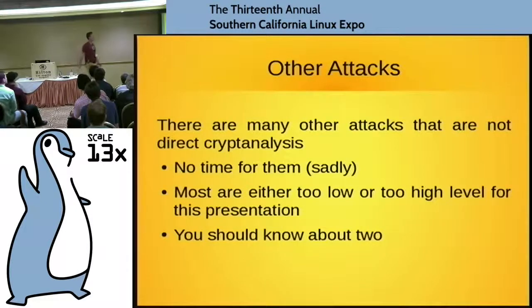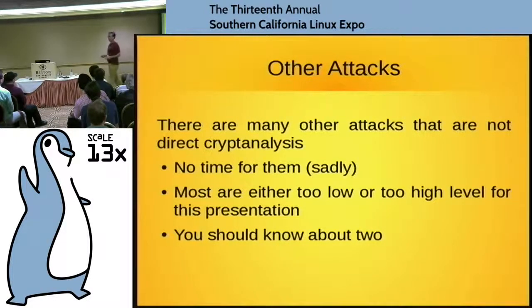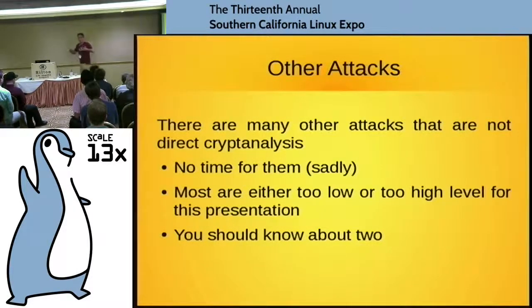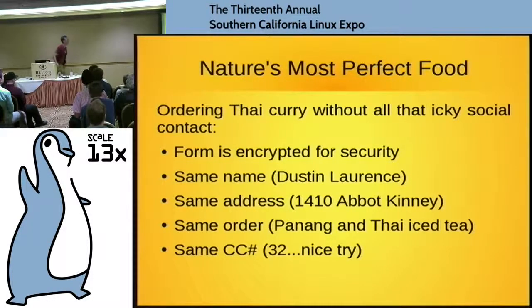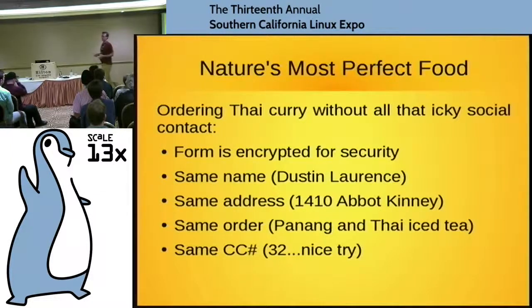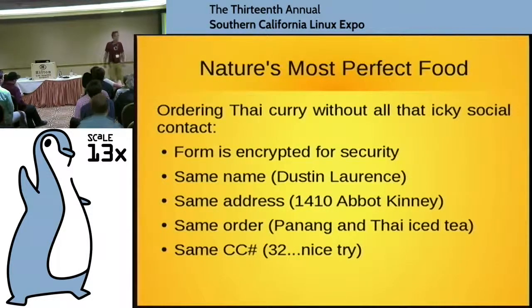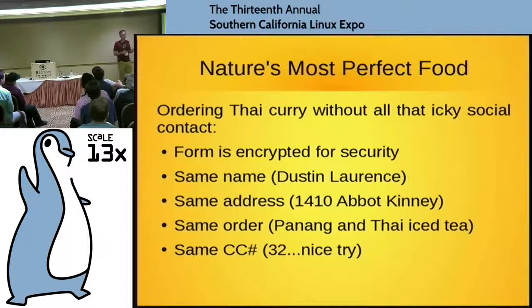Now there are actually a whole bunch of other attacks that are not direct cryptanalysis. Most of them don't fit in this talk because they're really low-level — you fix them in the implementation — or they're really high-level — you fix them with the rest of your security posture. But there's a couple I want to talk about. So let's talk about nature's most perfect food: Thai curry. Obviously I'm going to order this on the web because the hacker's union will disbar me if I seek out interpersonal interaction.